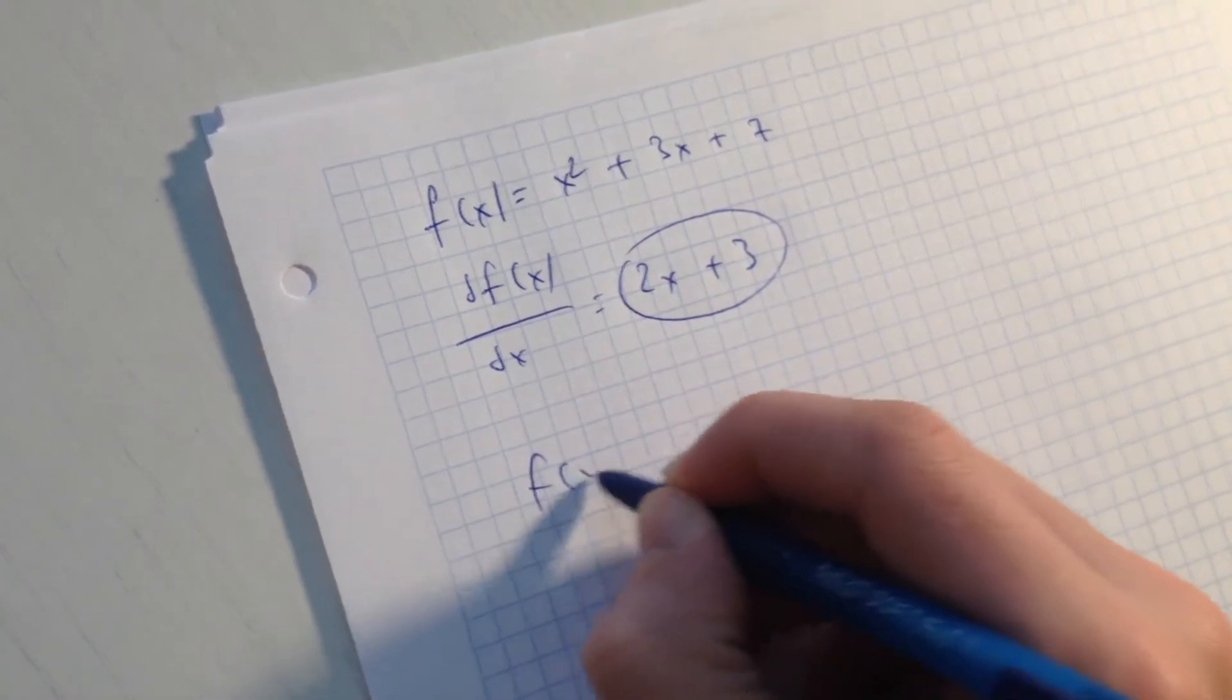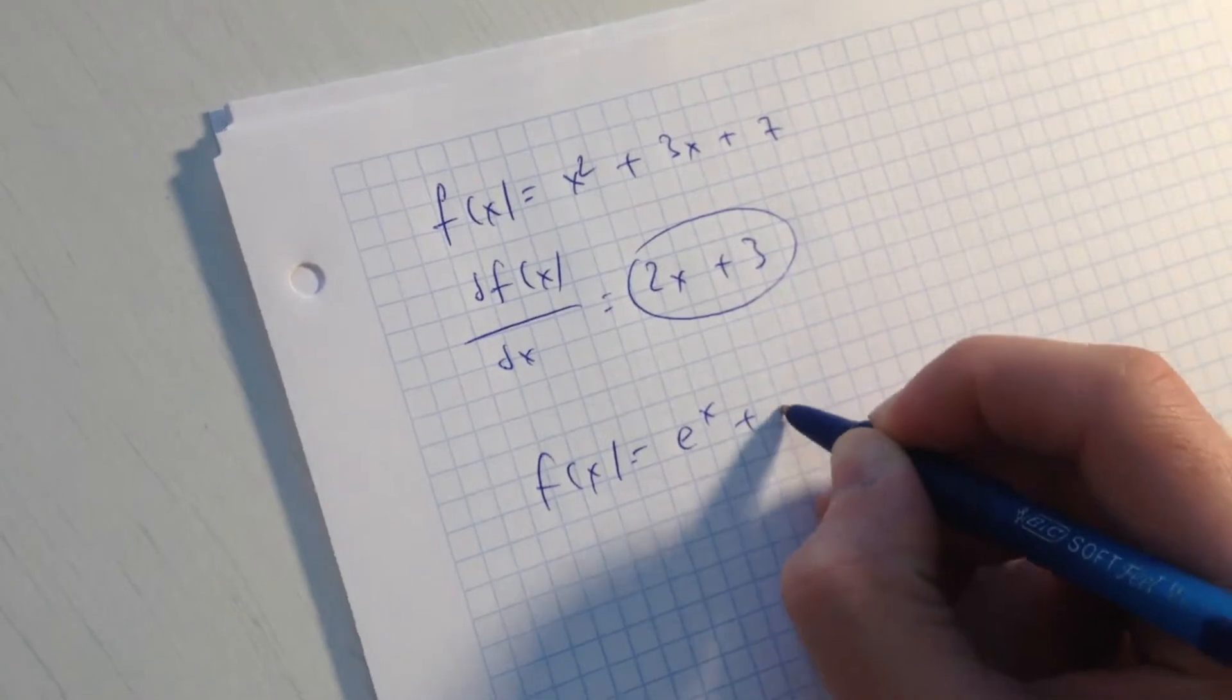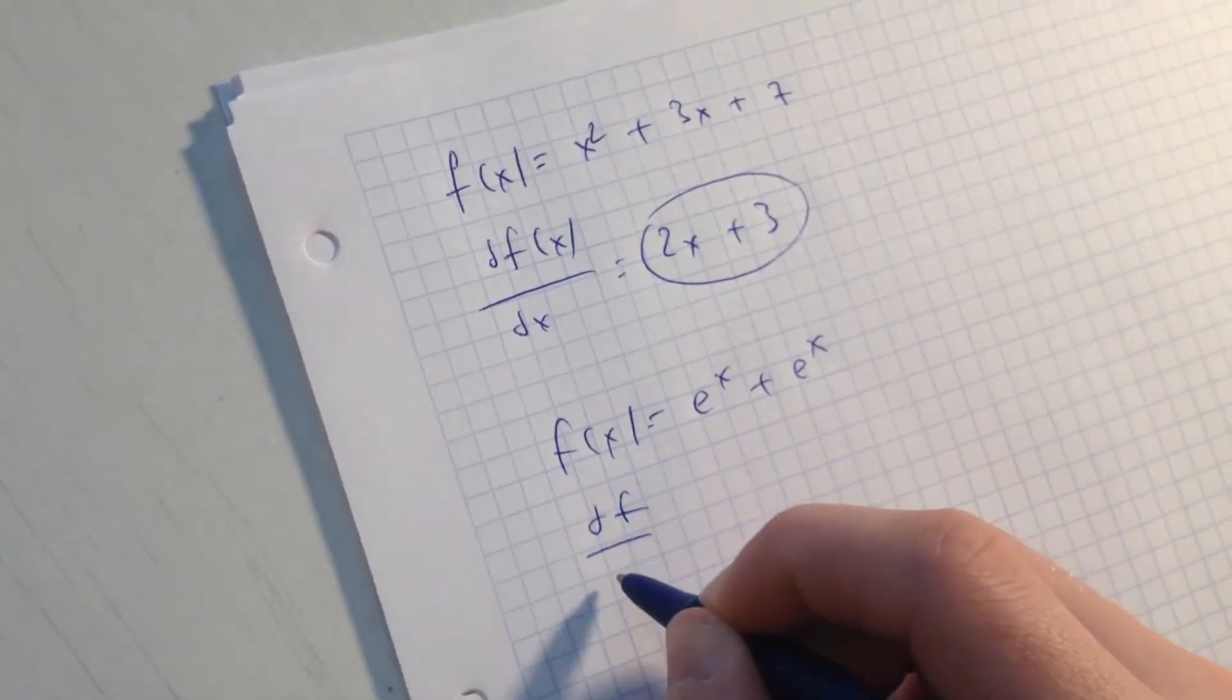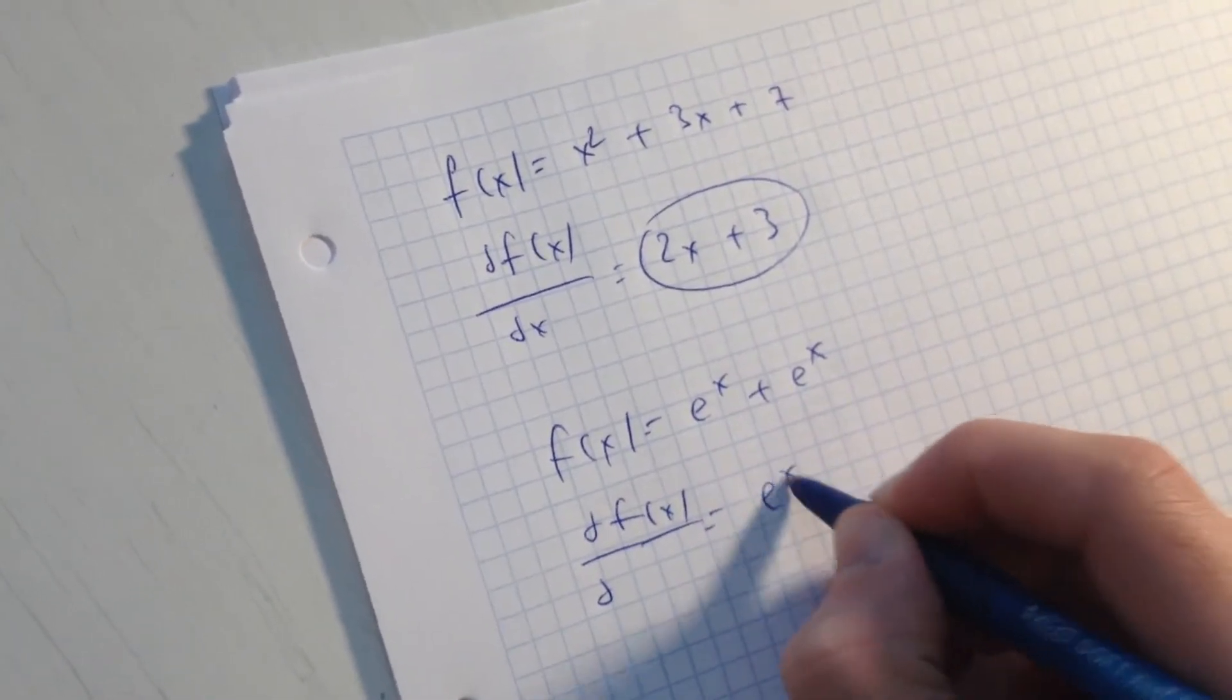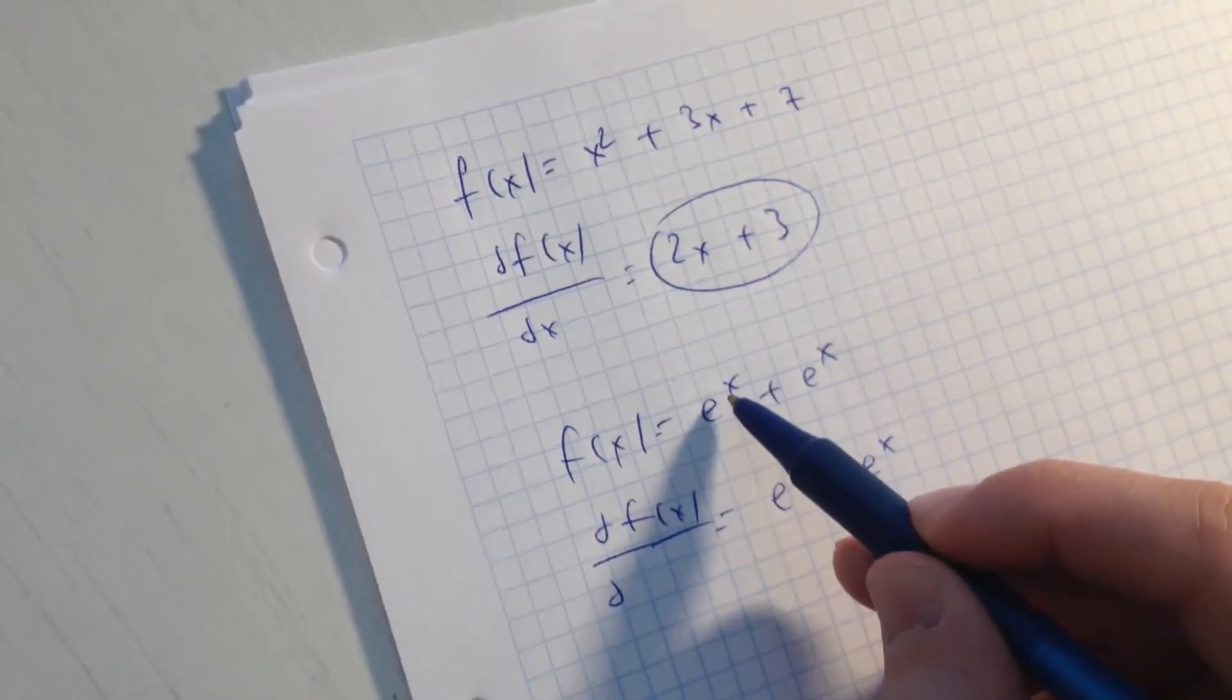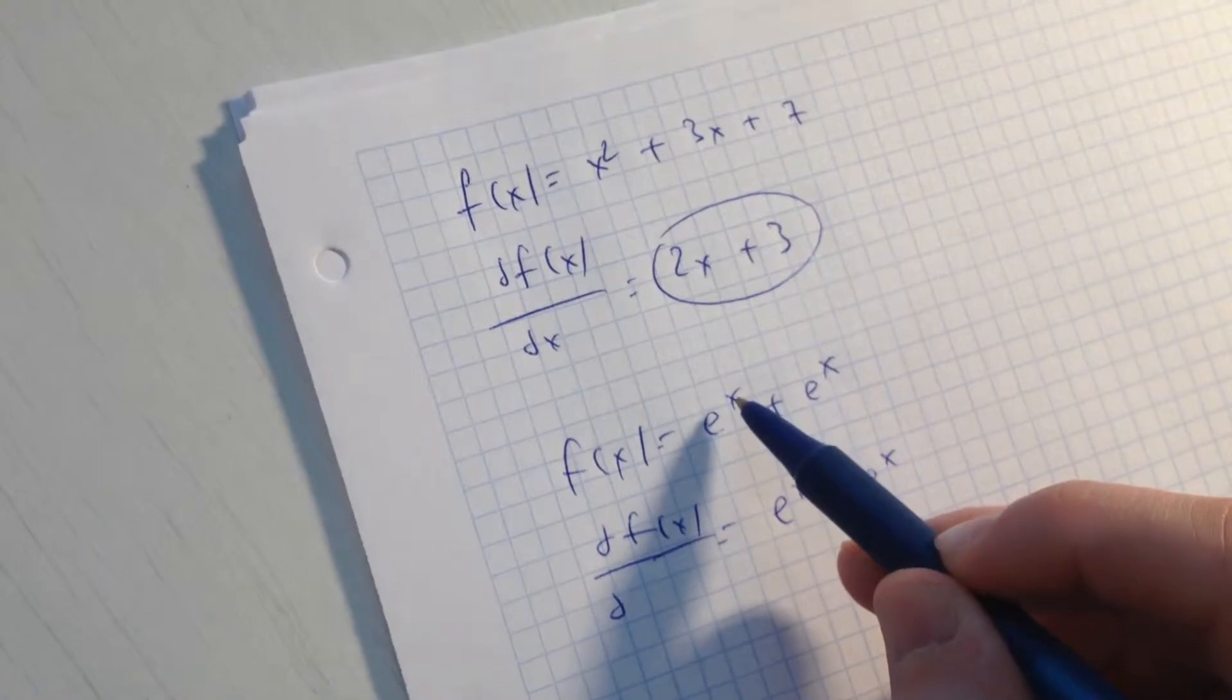f(x) is going to be e to the x plus e to the x, and if we derive this function it's going to be just e to the x, because e to the x in the power of x and x has just one